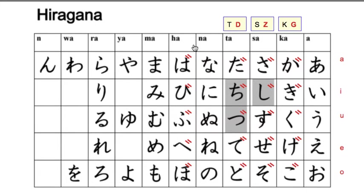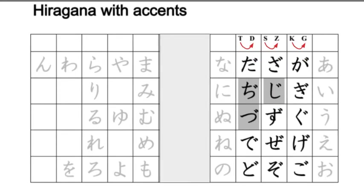My next video — a separate video — is going to explain what happens to the ha, hi, hu, he, ho column. If I gave you a paper hiragana chart, it shows you on the back that K becomes G, S becomes Z, and T becomes D. And again, my next video will explain what happens to the ha, hi, hu, he, ho column, because that one's a little bit different.